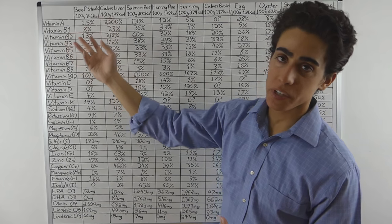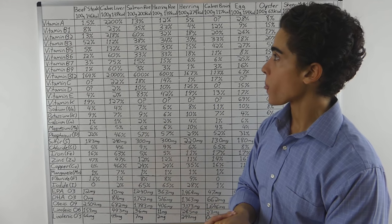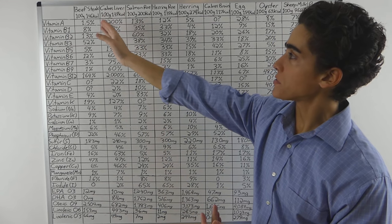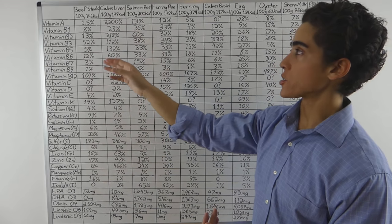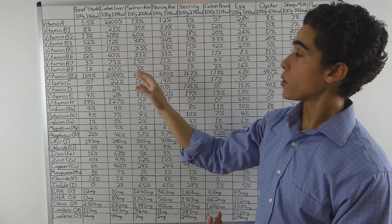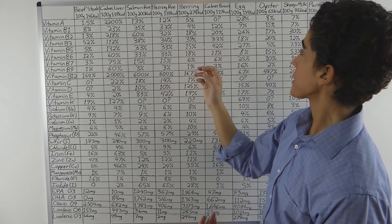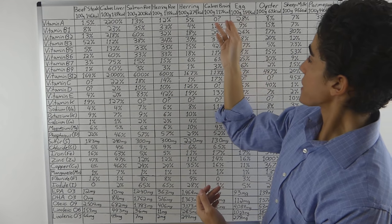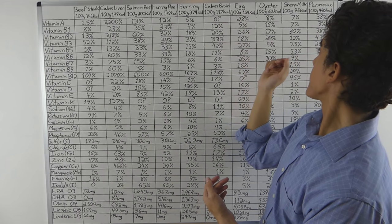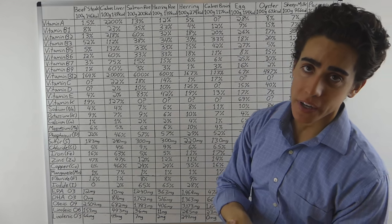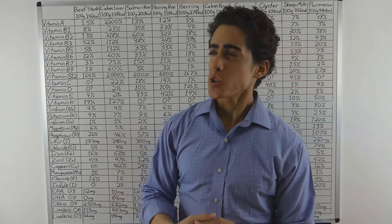So we have beef steak with medium fat, pasture-raised calves liver, wild-caught salmon roe, herring roe, herring, and oysters. We have some calves brain here, farm eggs, grass-fed sheep milk, and raw milk parmesan cheese.